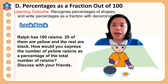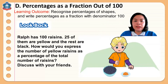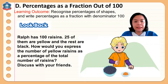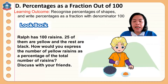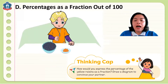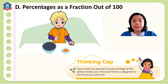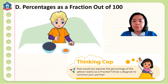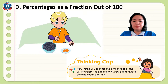I have here a picture. This is Ralph. Ralph has 100 raisins; 25 of them are yellow and the rest are black. How would you express the number of yellow raisins as a percentage of the total number of raisins? You can share that during our class. How would you also express the percentage of yellow raisins as a fraction? You can draw a diagram for that and share during our class.